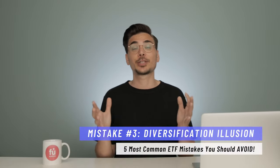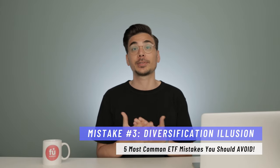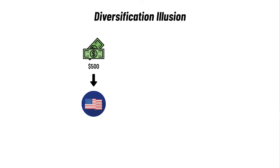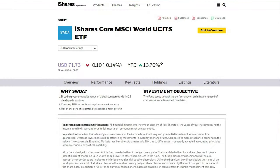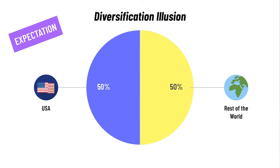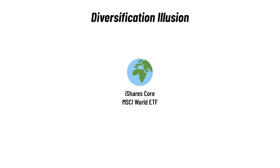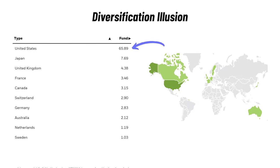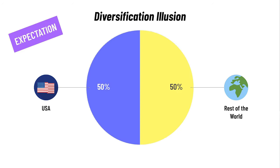Mistake number 3 in ETF investing is diversification illusion. This happens when you have overlapping assets in your ETFs. For example, say you're from the US and invest $500 every month into BlackRock's iShares Core S&P 500 ETF. Then you get a salary increase and pick the iShares Core MSCI World ETF — which invests in 23 developed countries and covers 85% of listed equities in each. You now invest $500 into both. Sounds diversified — 50% US and 50% global — but the MSCI World ETF holds over 60% of its assets in the US, meaning you've actually allocated over 80% of your investments into the US. That's the diversification illusion.